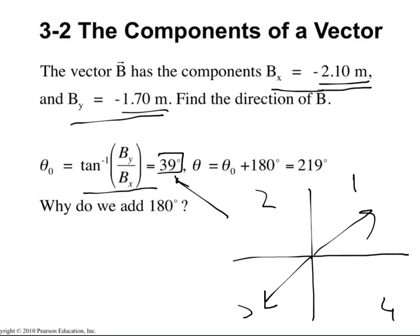What you should do if and only if both components are negative: add 180 degrees to what you find in the calculator. This corrects the angle so it points to the proper third-quadrant direction.